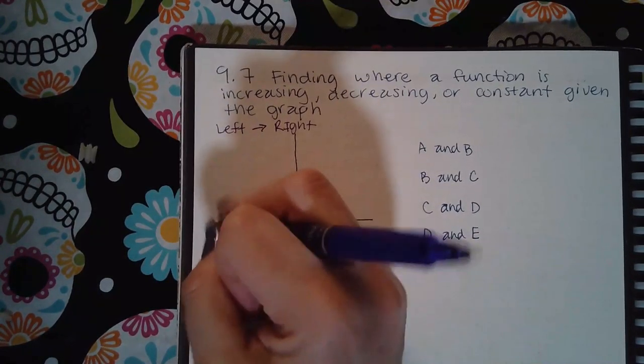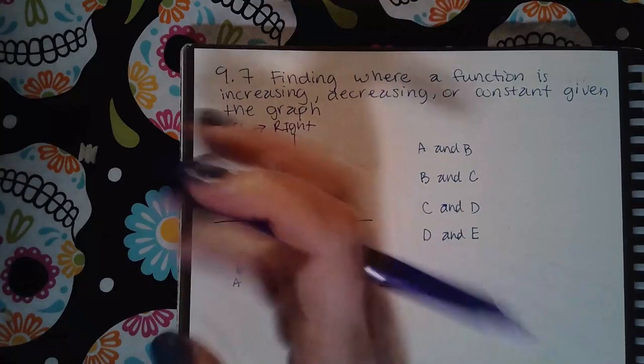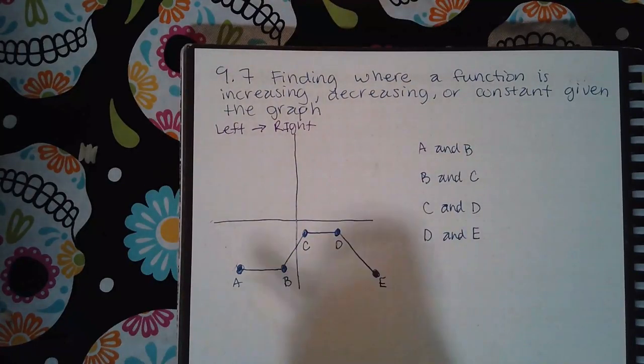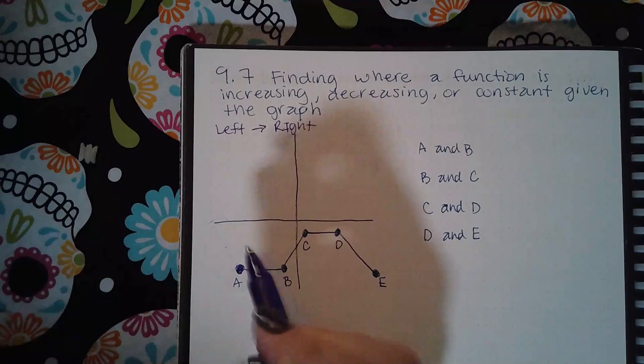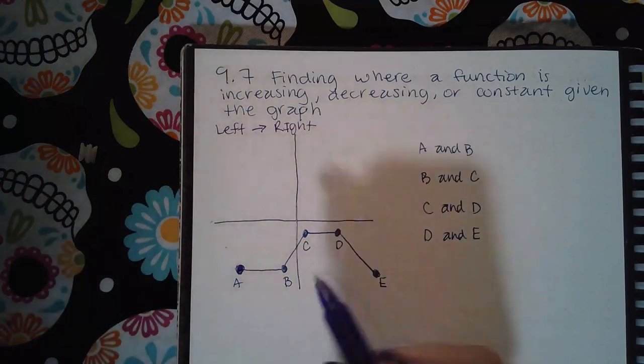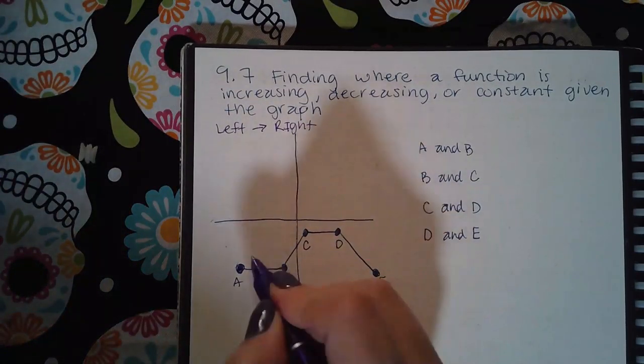What I like to do is I like to trace the graph. I start with the very left thing I see on the image, and then I just start tracing and labeling as I go. So here it's staying flat, which means it's constant.